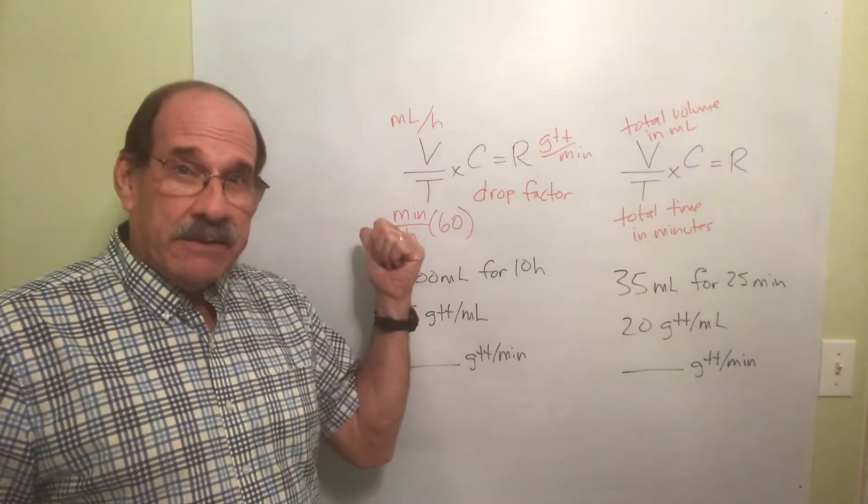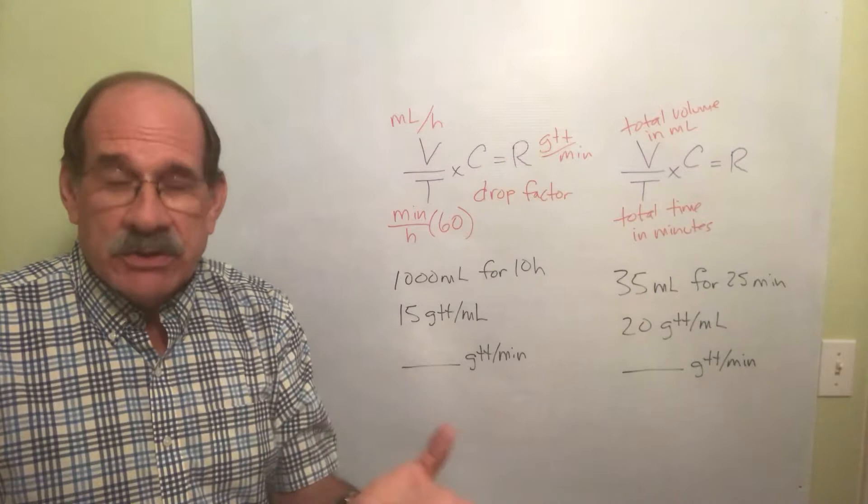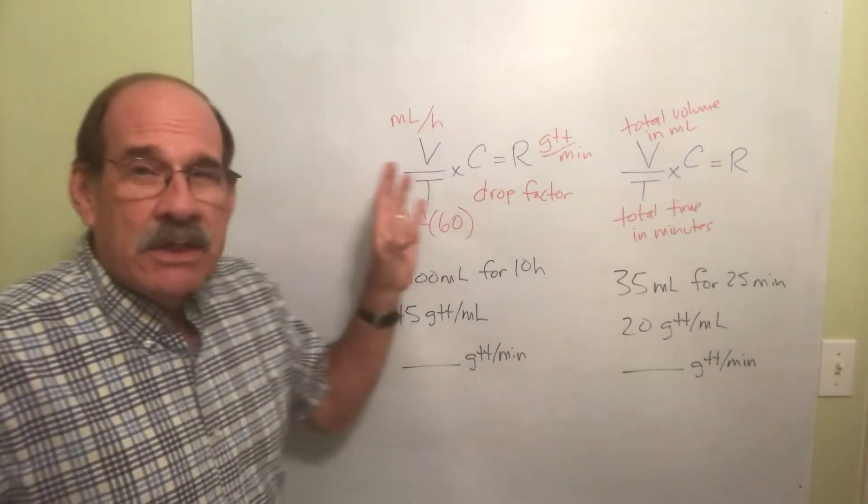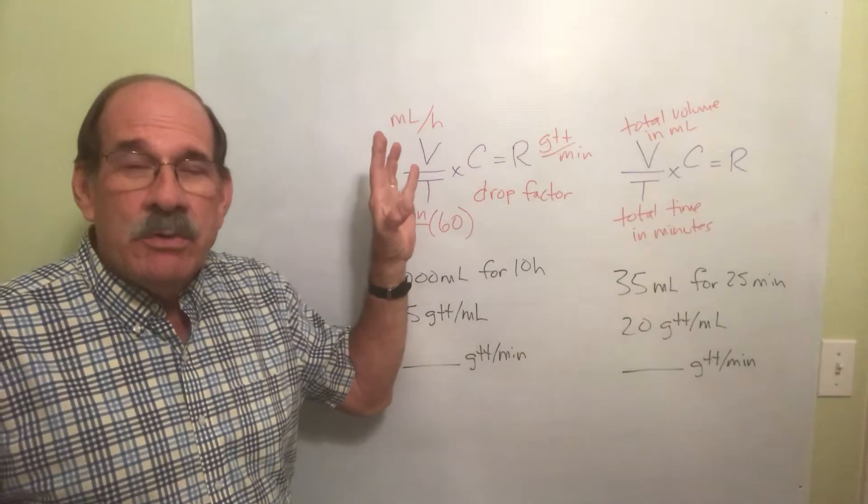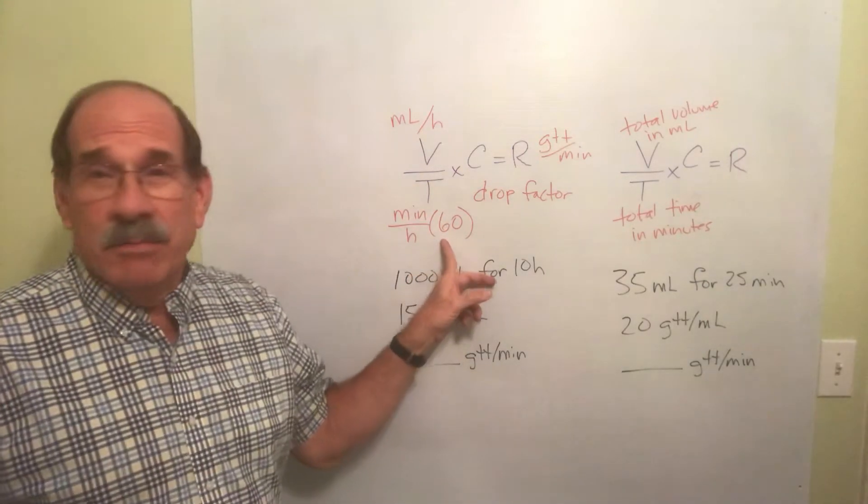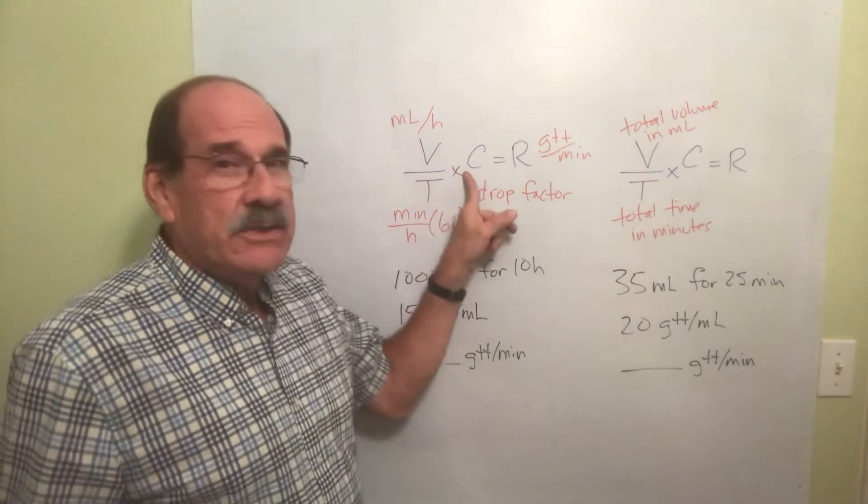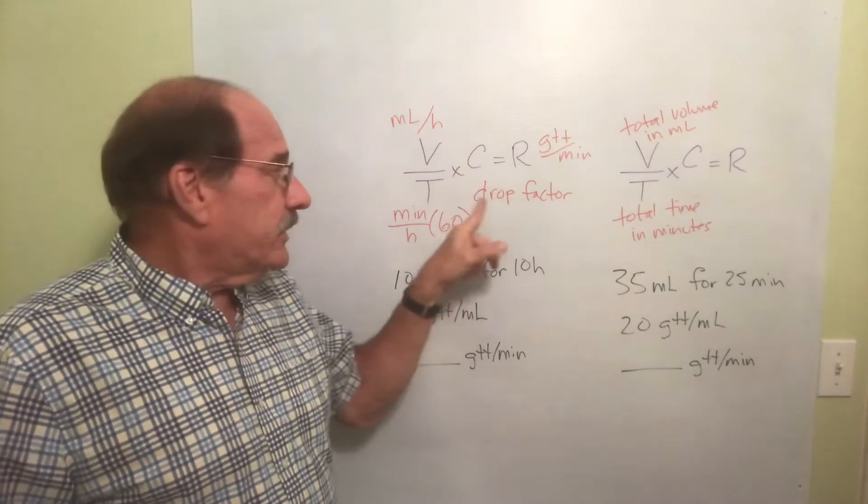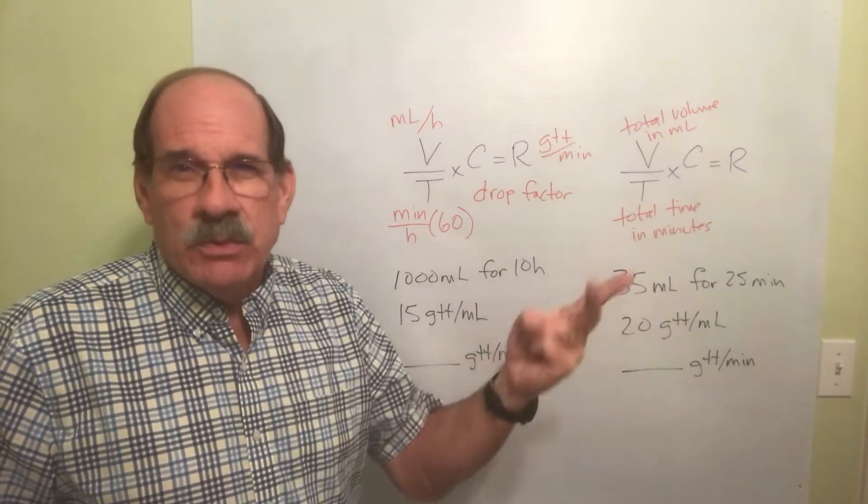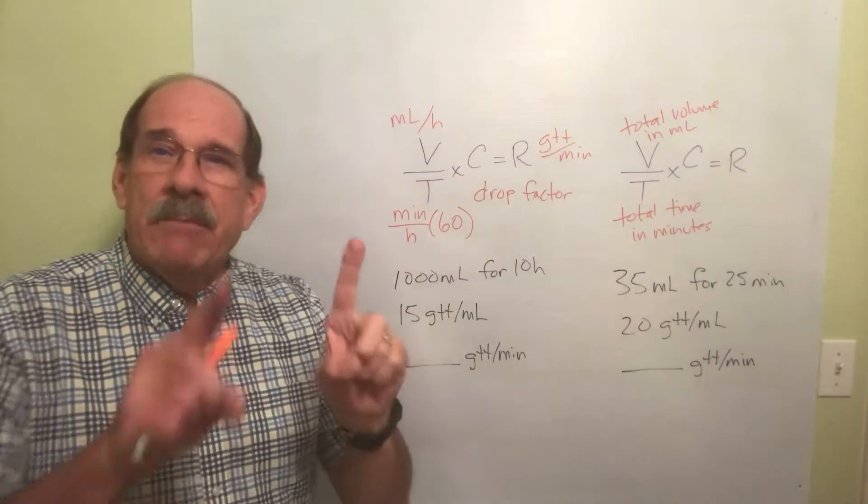V is the number of milliliters per hour. If you have a machine, you have to find that out and that's what you plug into the machine. But without a machine, that's your starting point. T, you better remember this, it's always the number 60 because it's the number of minutes in an hour. C stands for calibration, that's the drop factor. It's how many drops there are to fill one milliliter—a number like 10 or maybe 12, sometimes 15, 20, or 60 for micro drop. The answer is just this divided by this times this.